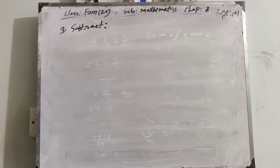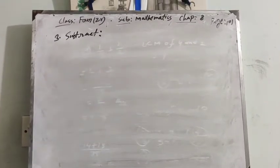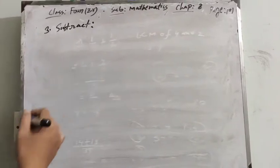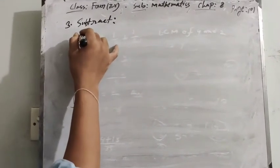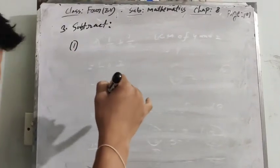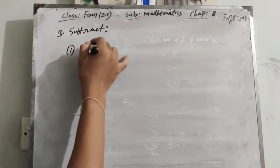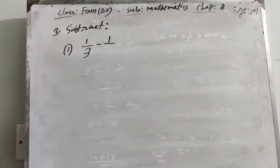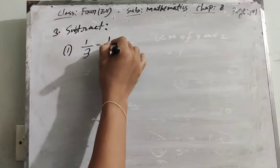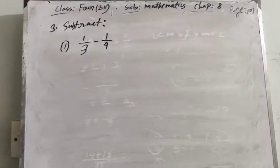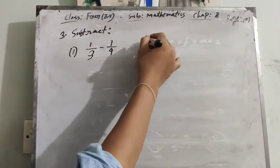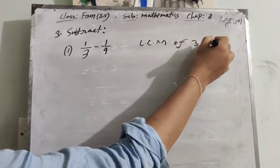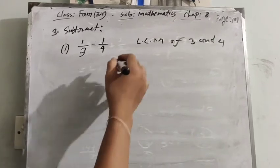Now we discuss about subtraction, page number 101, question number 3. The question is 1/3 minus 1/4. The LCM of 3 and 4 is 12.